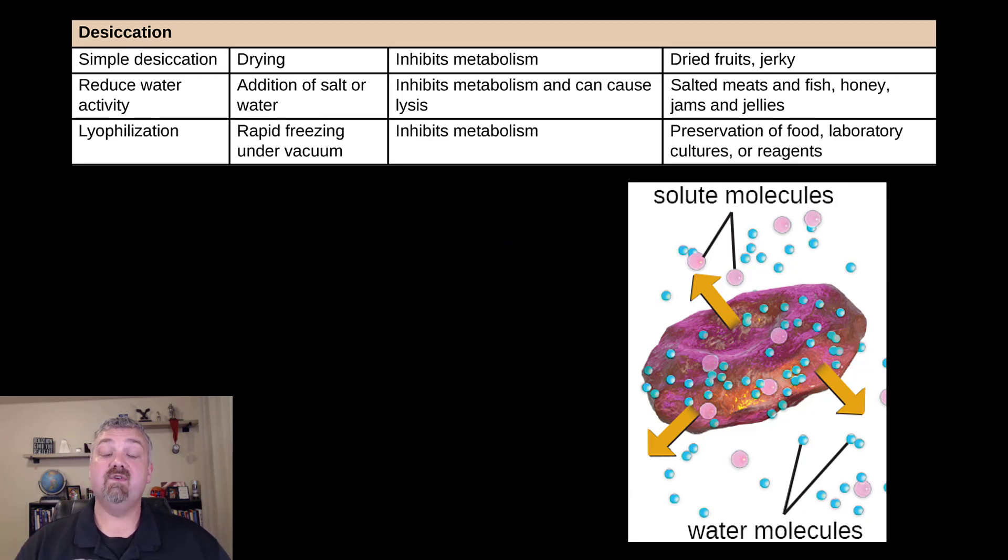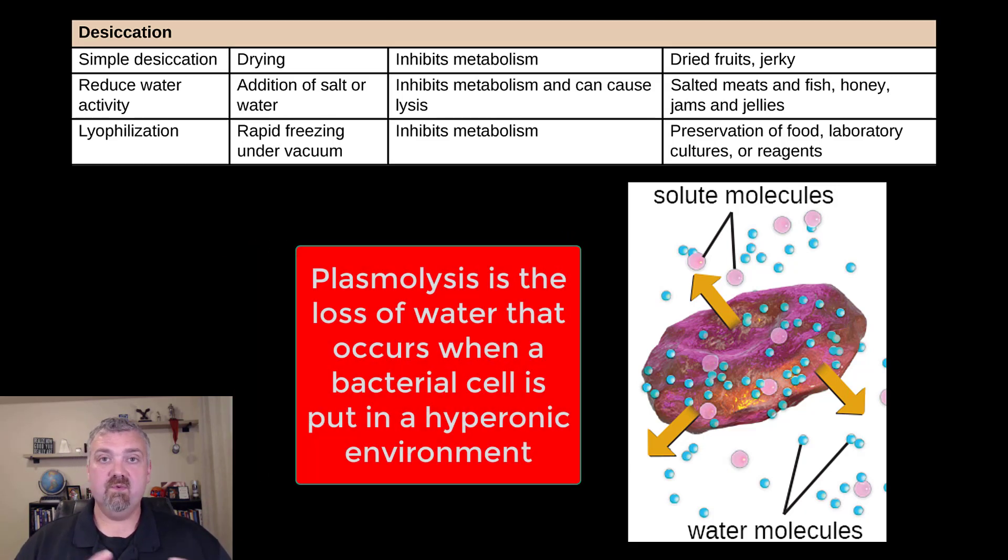Now the term, which I do want you to know, is called plasmolysis. So if you remove the moisture, remove the water from a living cell, it's called plasmolysis. So that's going to be creating a hypertonic environment. Think about your canned goods from the grocery store mainly.